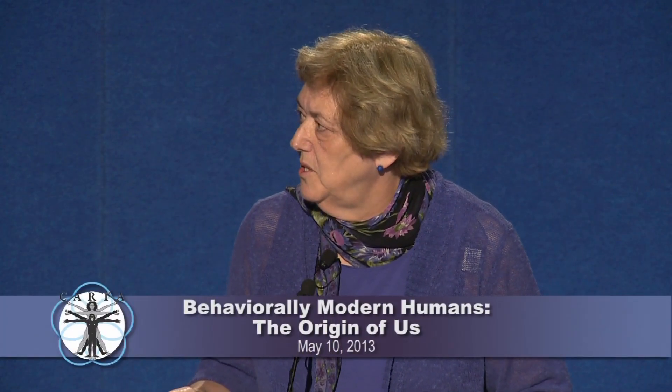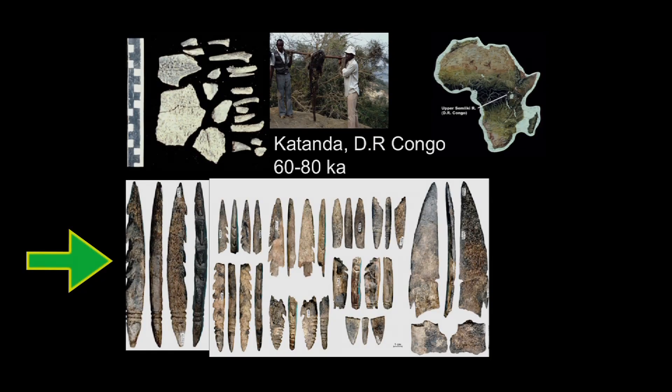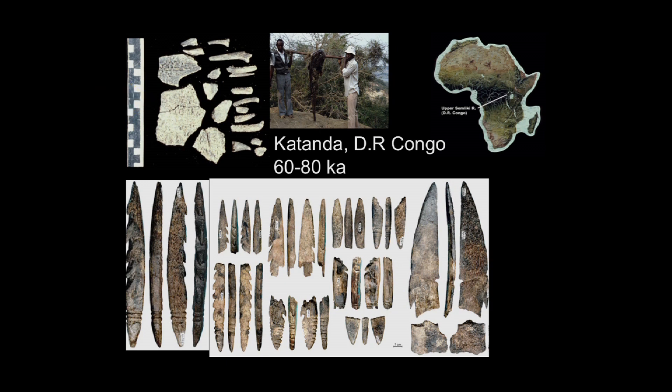In addition to stone points, we also have bone points. These are from Katanda, on the western edge of this eastern zone on the edge of DR Congo, dated to about 60,000 to 80,000 years ago, and associated with the bones of very gigantic fish. There's a whole suite of these — three different sites where we found them in association with Middle Stone Age artifacts.